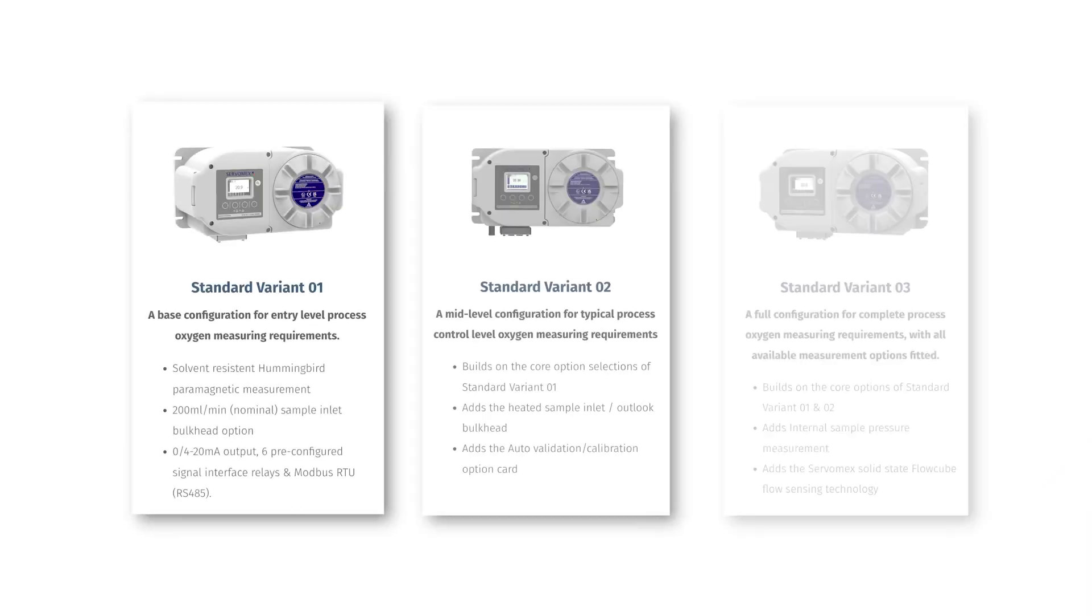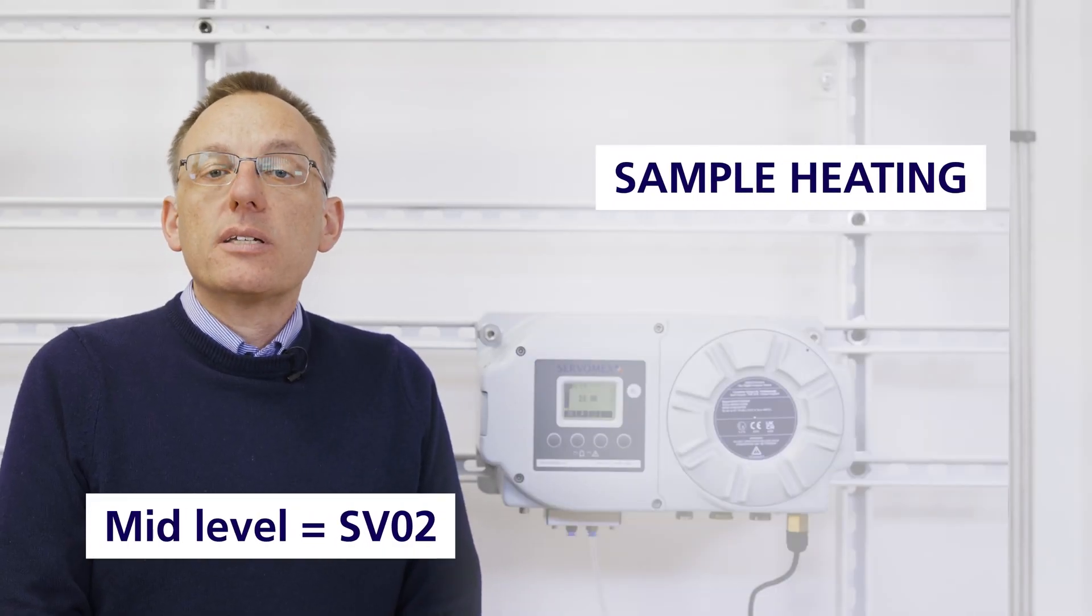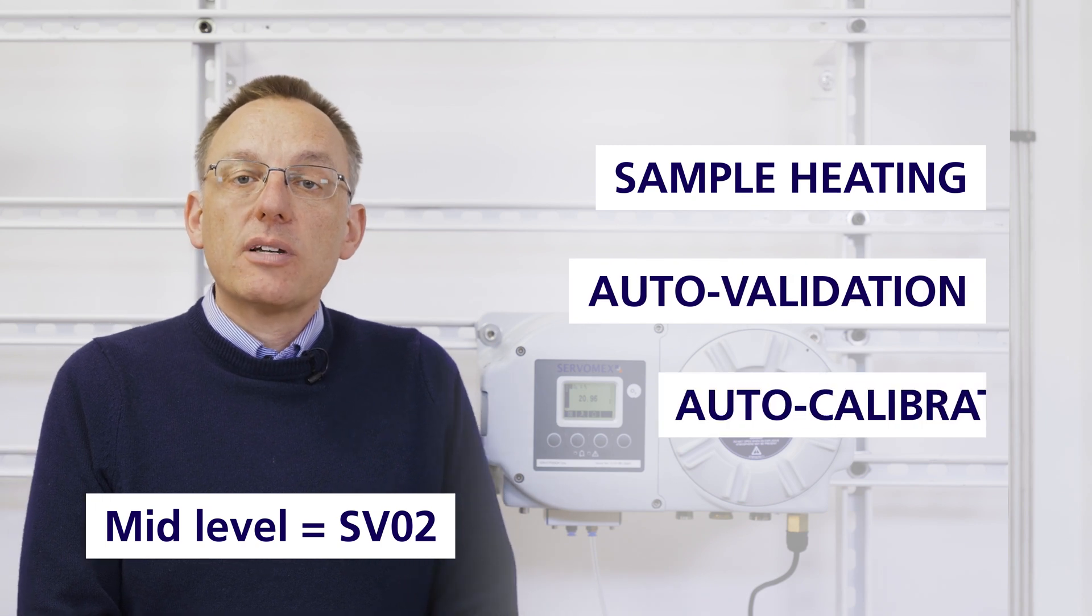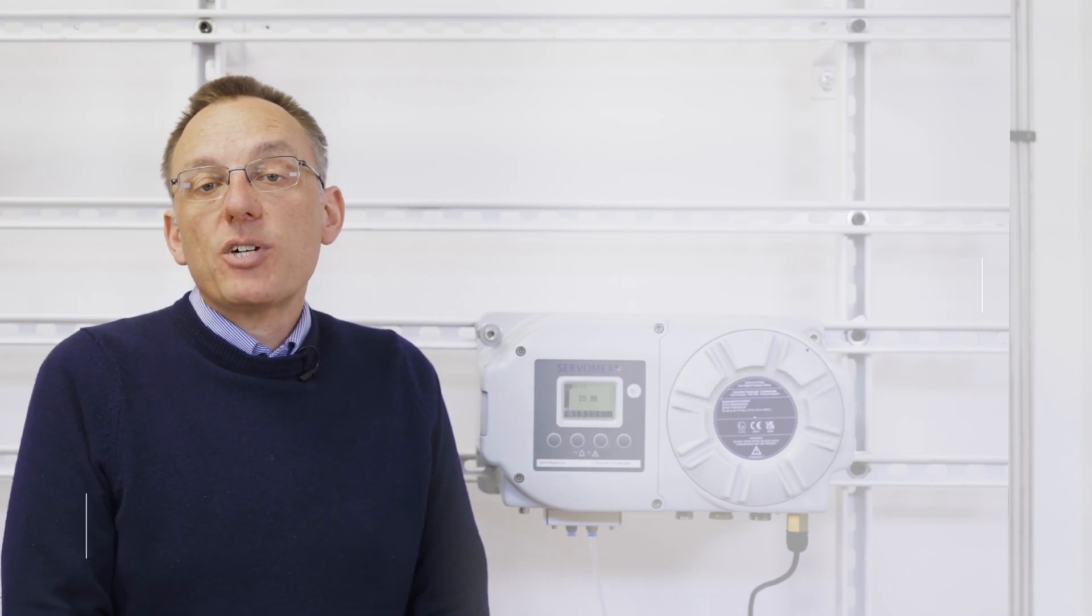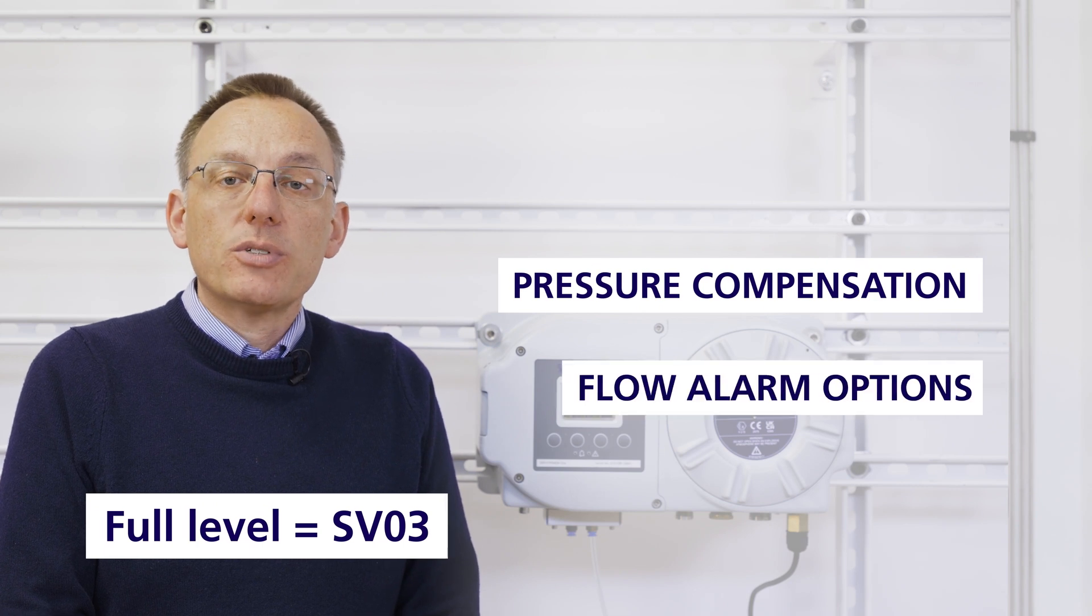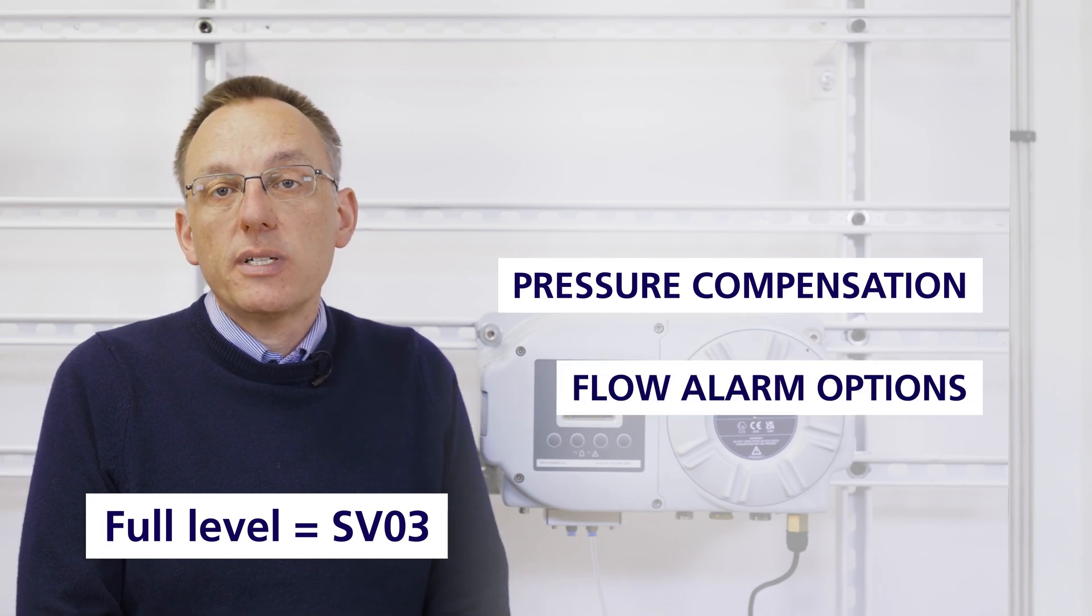Three pre-configured standard build variants are available for quick turnaround covering the most commonly chosen options. The base level variant includes the solvent-resistant transducer for general oxygen measurement requirements. The mid-level variant adds sample heating, auto-validation and auto-calibration. And the full variant adds pressure compensation and flow alarm options covering all your process measurement needs.